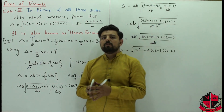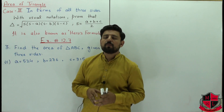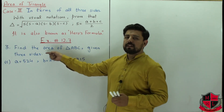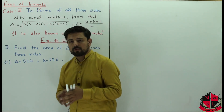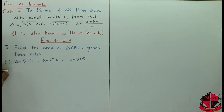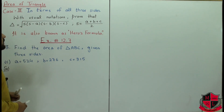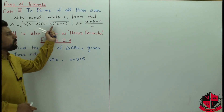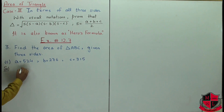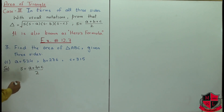After deriving the formula, we move to exercise 12.7, question number 3, which asks us to find the area of a triangle when all three sides are given. Since three sides are given, we use Hero's formula: area equals square root of s(s minus a)(s minus b)(s minus c). For this, I first need to find the semi-perimeter s, which equals (a plus b plus c) over 2.